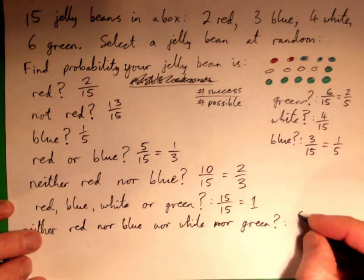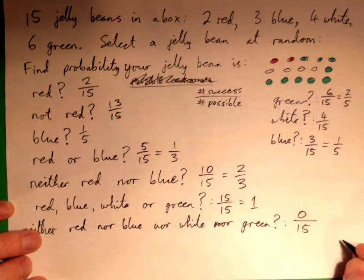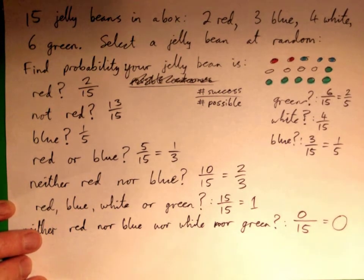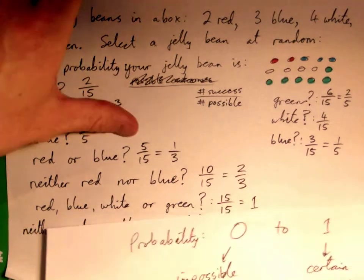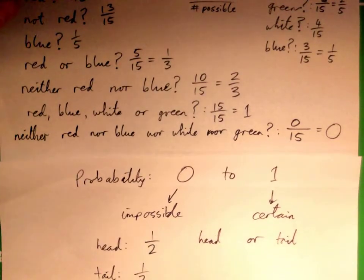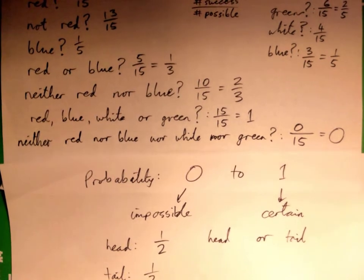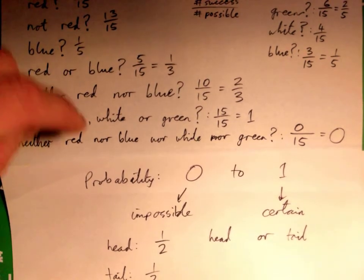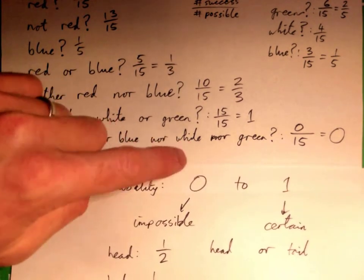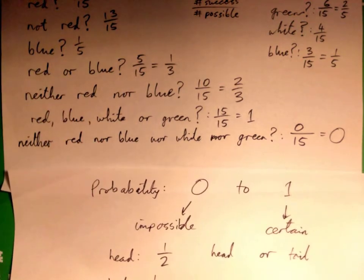Zero chance. Zero out of fifteen for fun, right? There are no jelly beans that fit that description. So, zero. And that's back to our probability of zero. That's an impossible event. If you select one jelly bean, it has to be one of those colors. So, the probability of it not being any of those colors is zero.